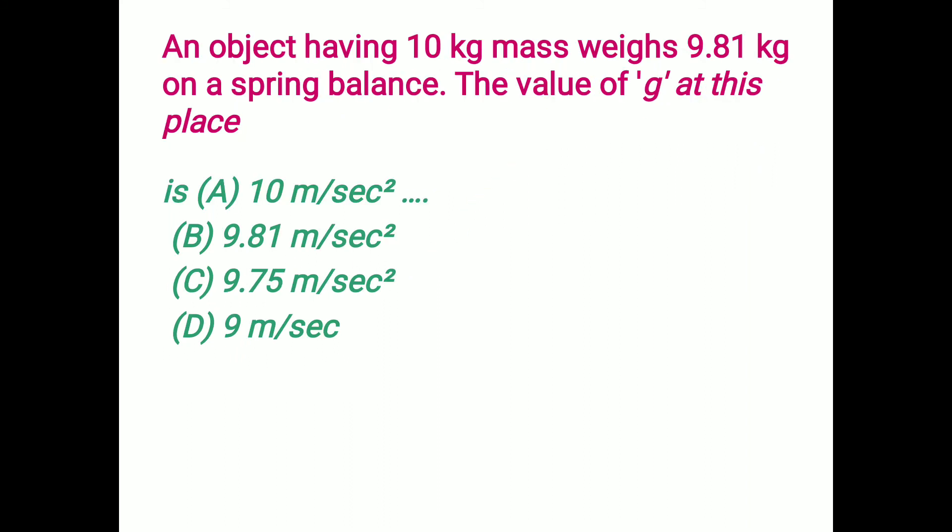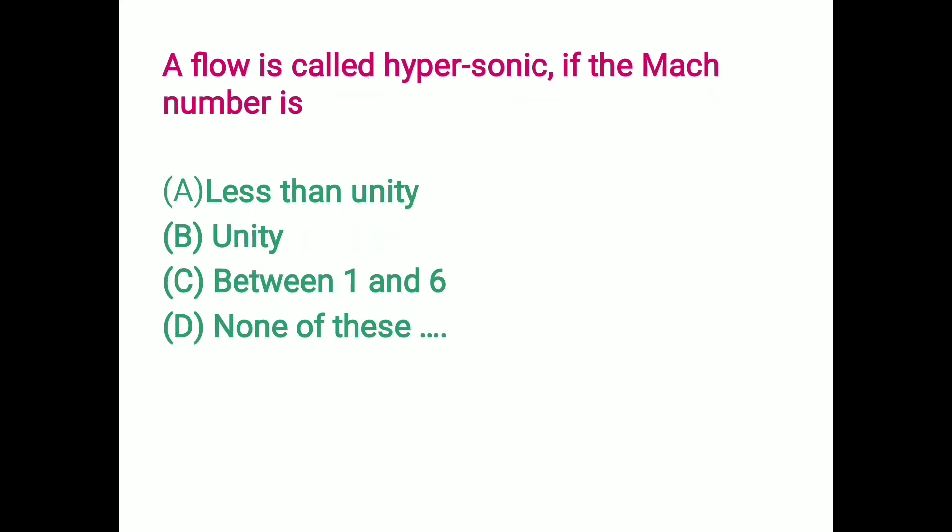An object of 10 kg mass weighs 9.81 kg on a spring balance. The value of G is 9.81 meters per second squared.